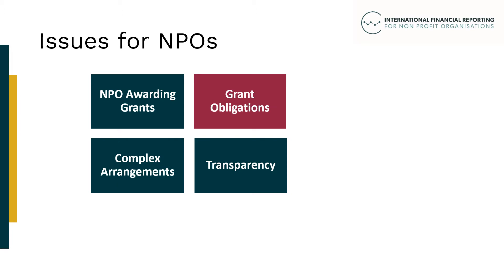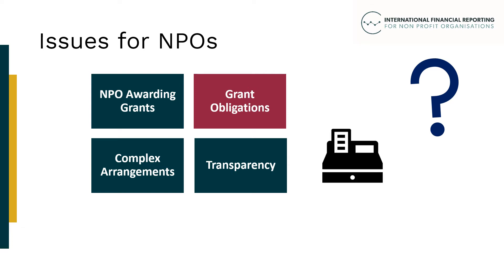Understanding where a grantor's obligations end in practice can create complexity. For example, if grant conditions are not met, does the grant still have to be paid? Or, if the grant has already been paid, can the grant awarder get a refund? In some cases, the only obligation may be for the grant recipient to meet its objectives, which may be difficult to assess. Where a grant is paid in arrears, there can be a gap between activities being performed and the grantor receiving confirmation. Without confirmation, a grantor may not be certain that the grant recipient is entitled to the grant.